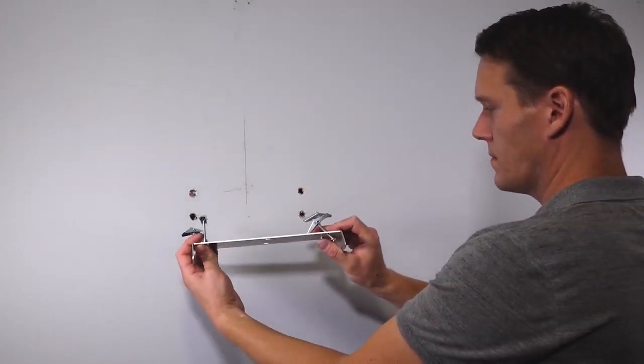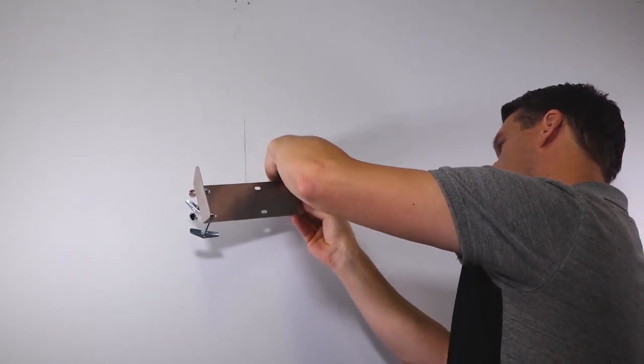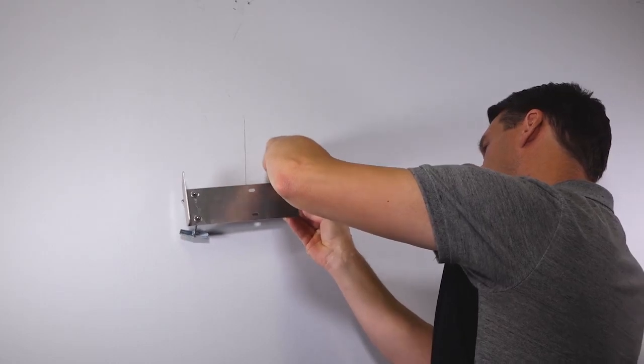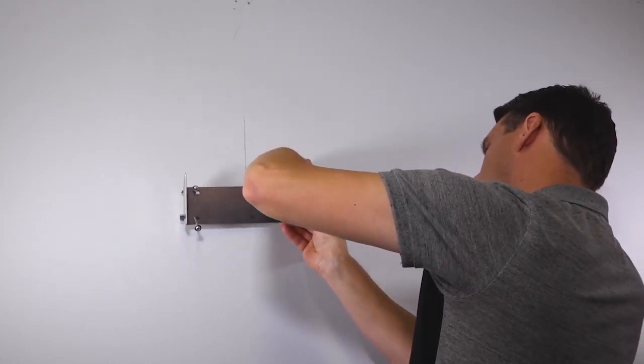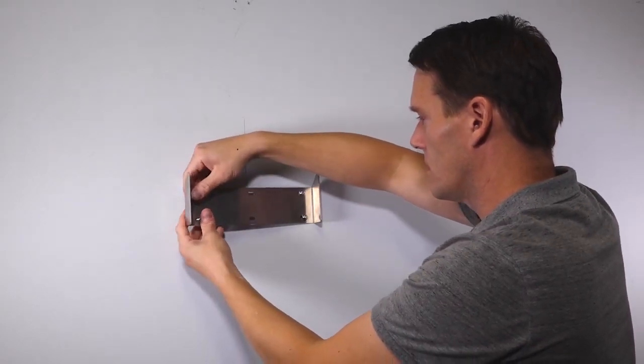Place the bolts with a washer through the wall mount and attach the toggle. Push all toggle bolts into drywall and tighten down. Make sure the two center drill holes are visible and the bracket is level.